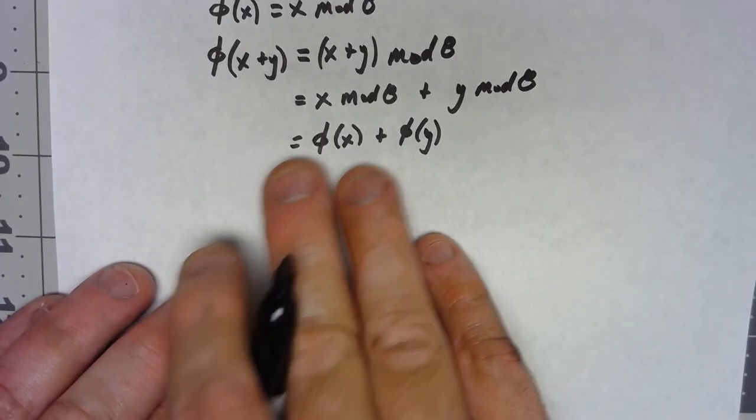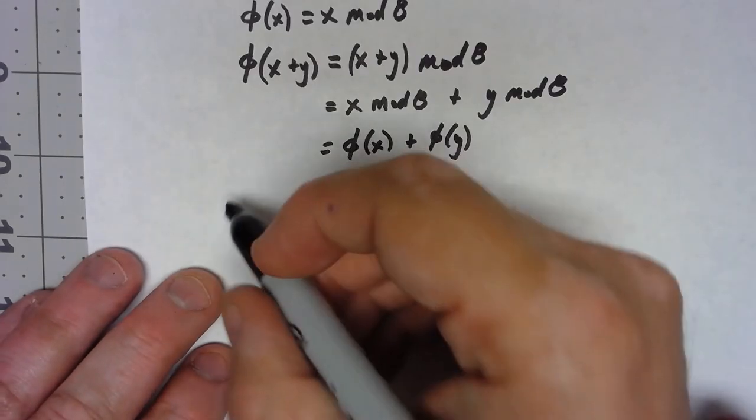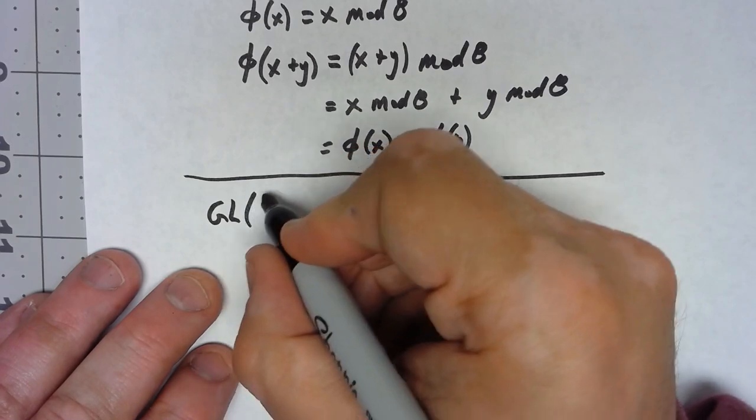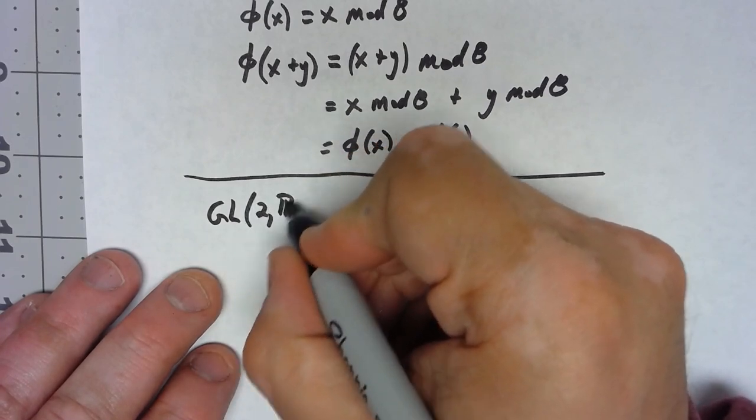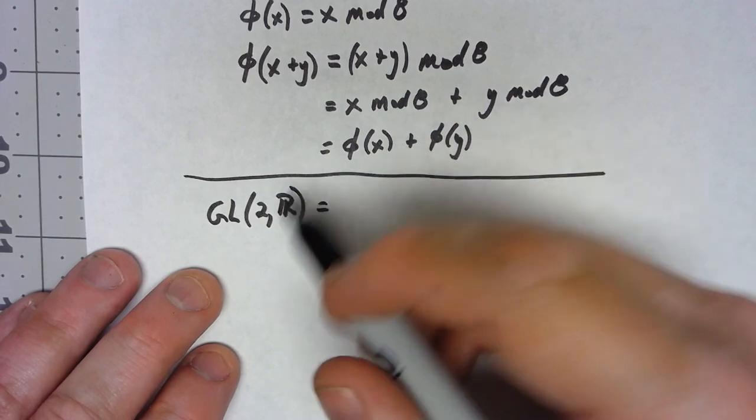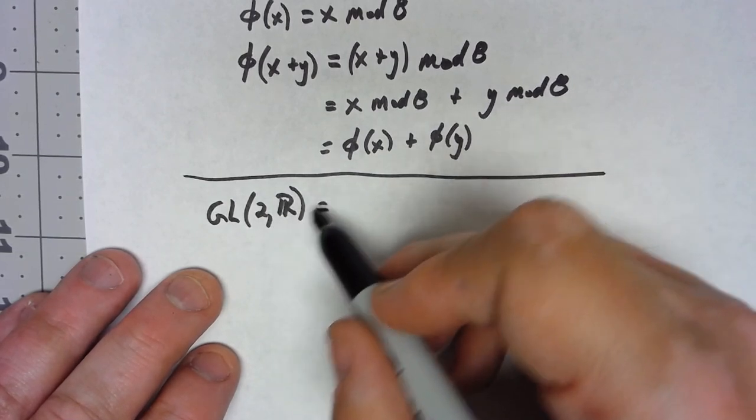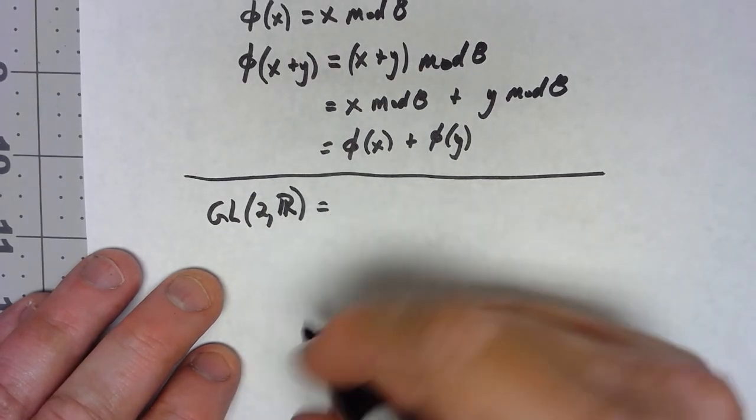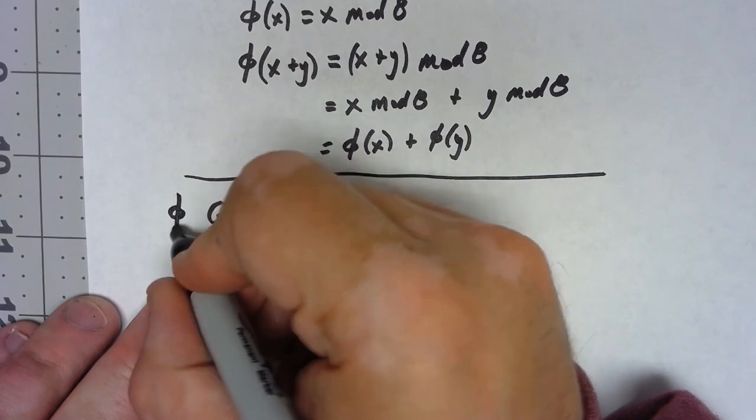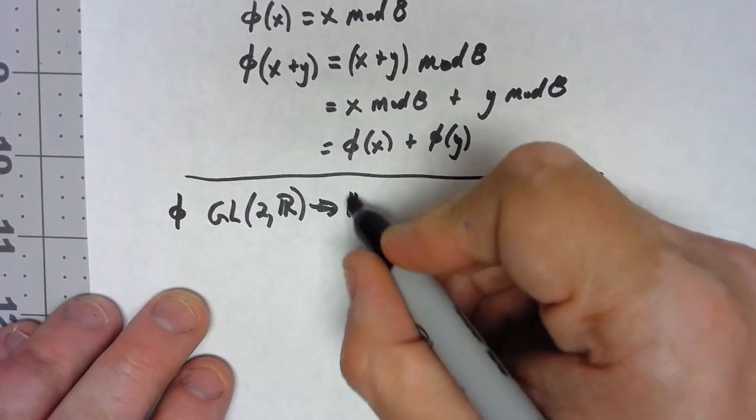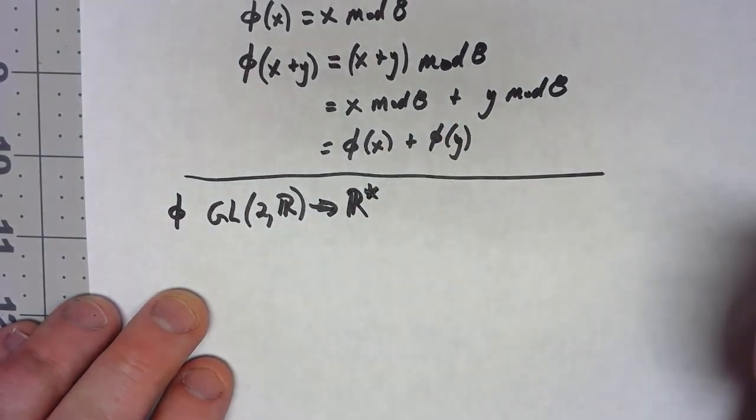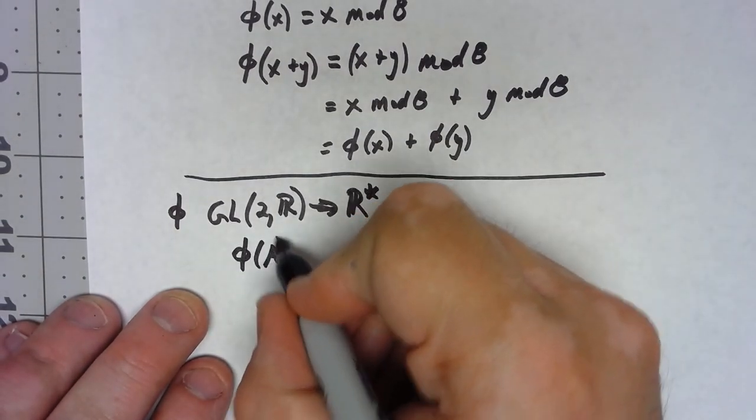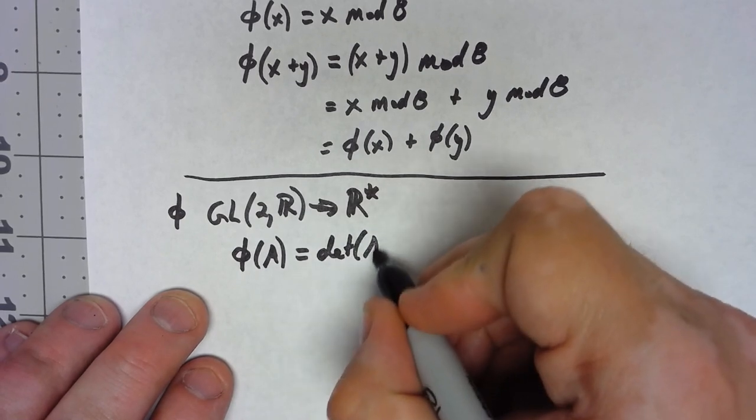That's okay, but now let's take a look at a more interesting example. If I look at GL2R, which we remember is the set of two by two matrices which are real valued and non-zero determinant, I can take phi from that into the set of non-zero real numbers defined by phi of a matrix A is equal to the determinant of A.